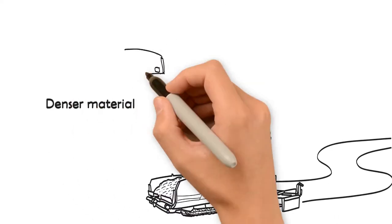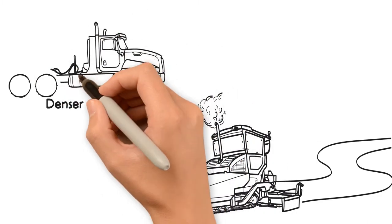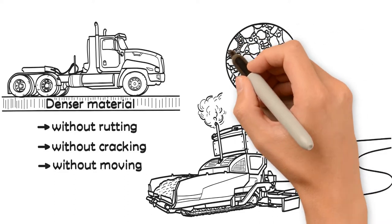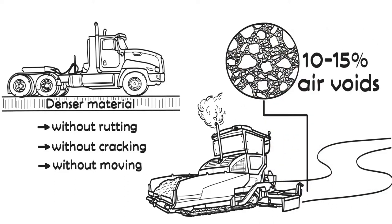Denser material is better able to support heavy loads without rutting, cracking or moving. The asphalt mat produced by the paver will normally have about 10-15% air voids.